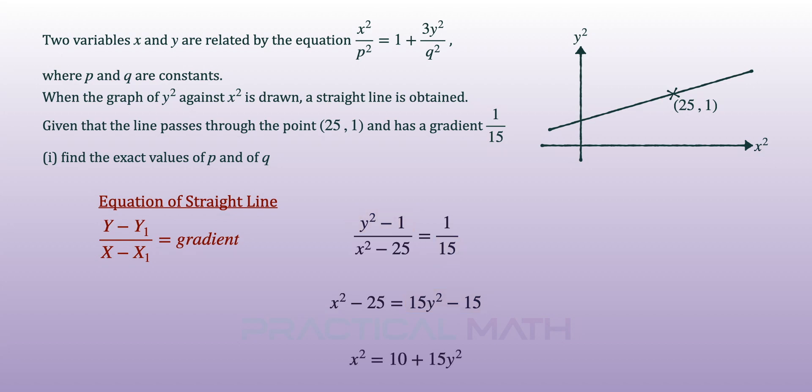Simplifying the constants to the right, we will have x² to be equal to 10 plus 15y². Now if we compare the constants in our equation and the given one in the question, it's not the same. So let's divide the equation by 10.